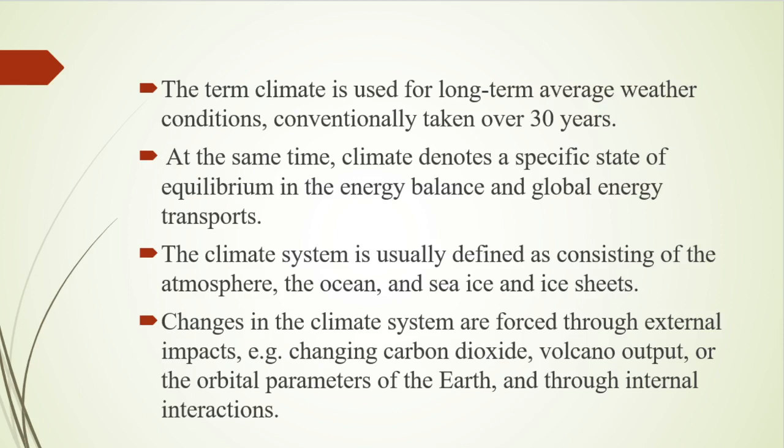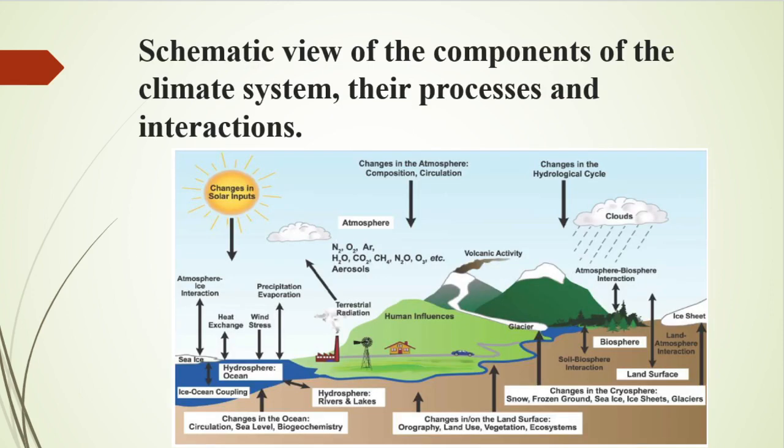The solar power has increased by about 30% since its birth. The continents have changed over millions of years. The contents of greenhouse gases has varied from years to billions of years. This is a schematic view of the components of the climate system, the processes and interactions.